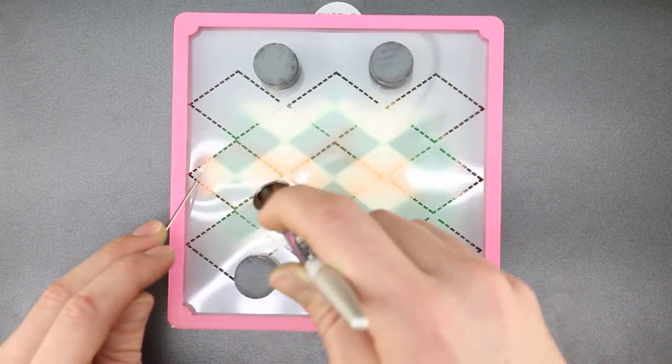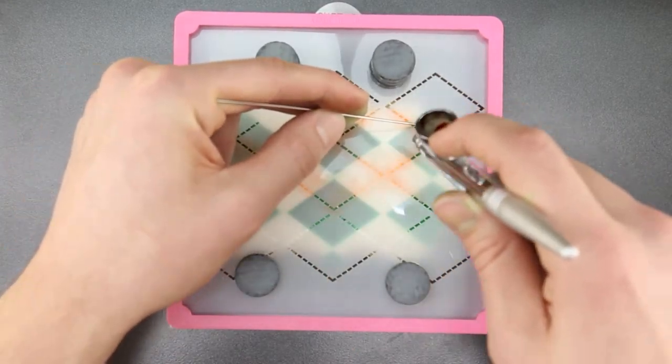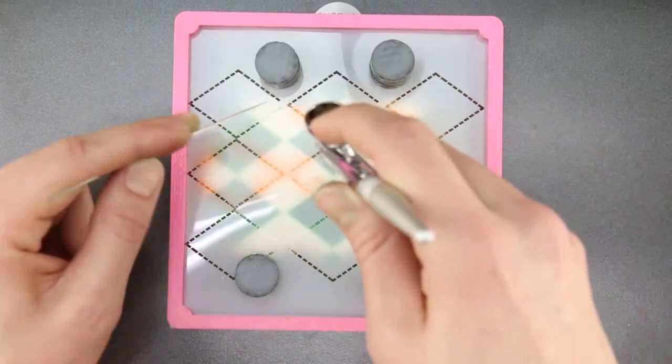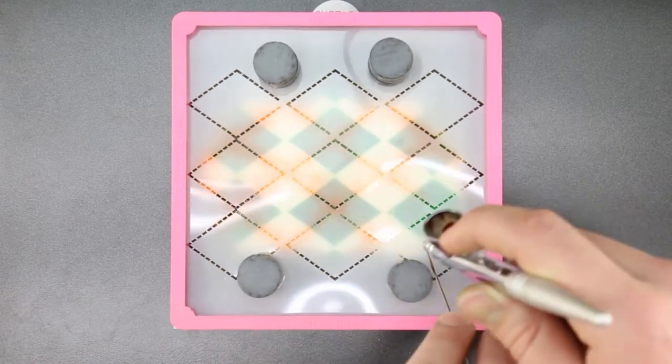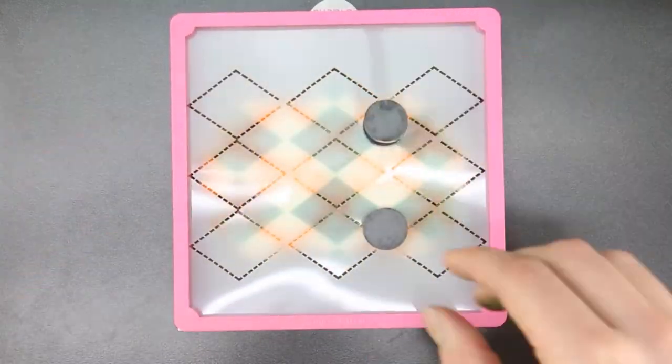Use a spare airbrush needle to hold the stencil flat anywhere it may not lay flat. You may need to touch up the design before moving on to the next cookie.